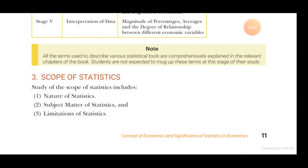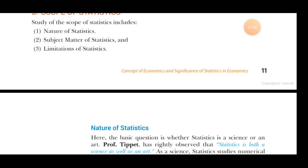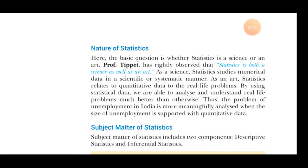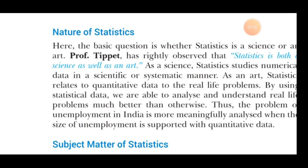The scope of statistics includes three aspects: nature of statistics, subject matter of statistics, and limitations of statistics. When we talk about the nature of statistics, we consider two things: art and science. Statistics is both an art and a science.